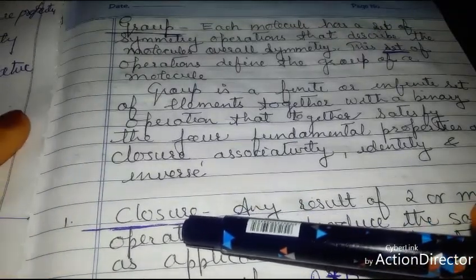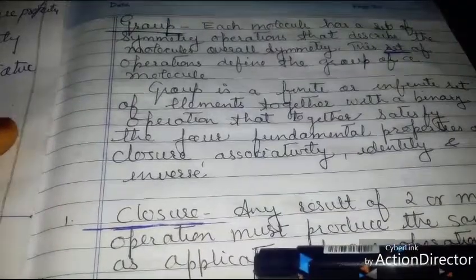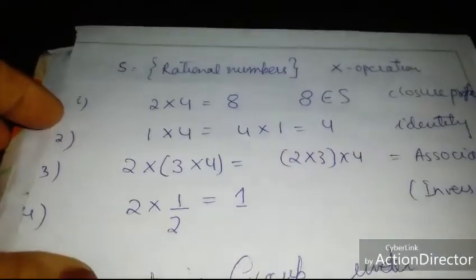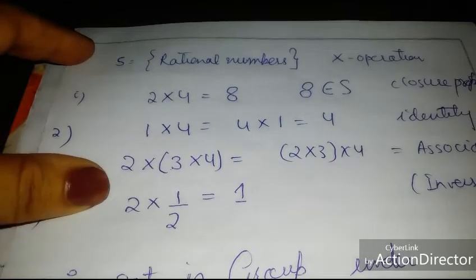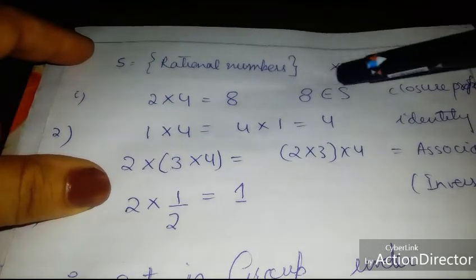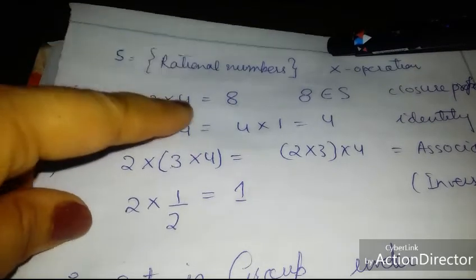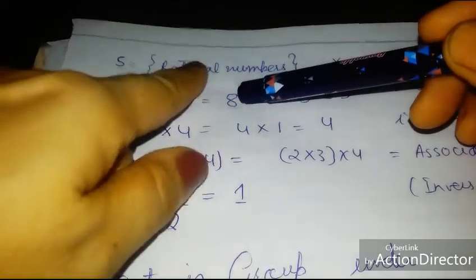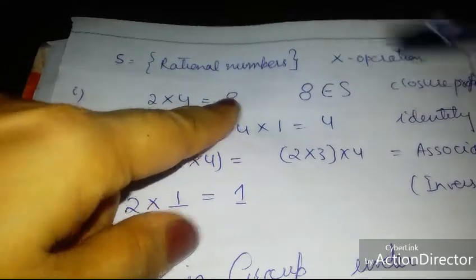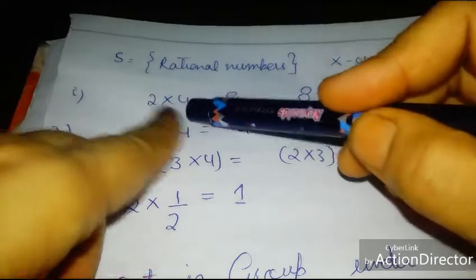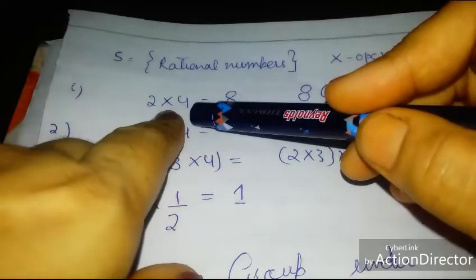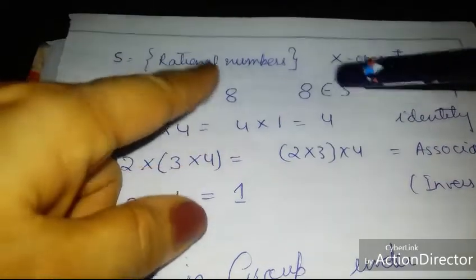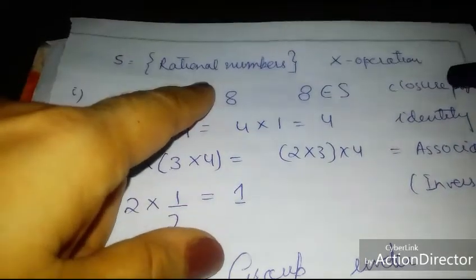Let me first explain these properties in terms of mathematics. Consider a set of rational numbers and the binary operation of multiplication. If I multiply 2 by 4 I get 8, and 8 again belongs to this set. This illustrates the closure property: take two elements from the set, apply the operation, and the result must also belong to that set.